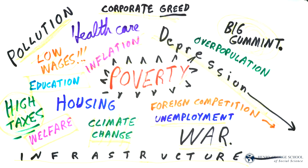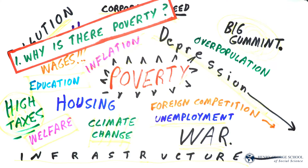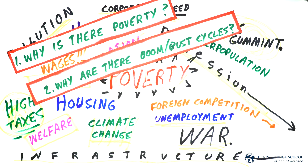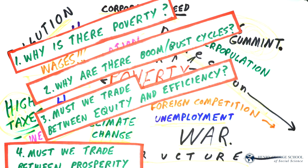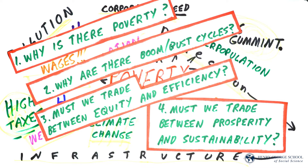Welcome back to Understanding Economics. In our first lesson, we identified four basic questions that a course in political economy would have to answer: Why is there poverty in a society that has great capacity to produce wealth? Why are there boom-bust cycles, and what can be done about them? Is it necessary to trade between equity and efficiency in our economic policy? And is it necessary to trade between prosperity and environmental sustainability? Those are our four questions.